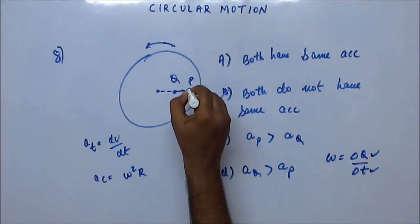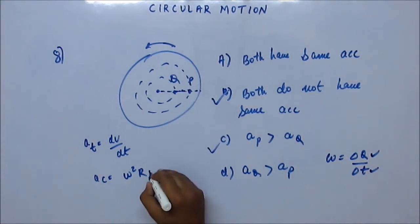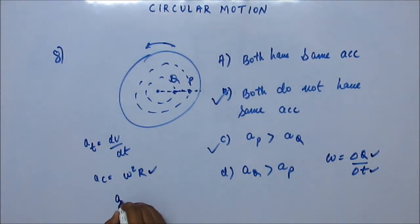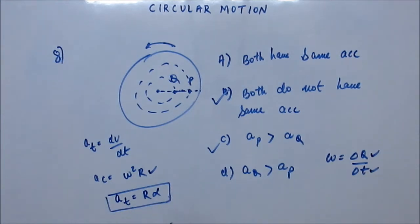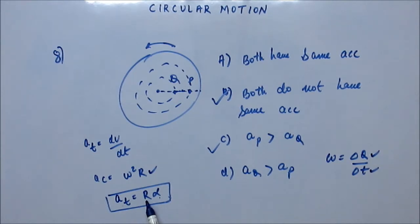P is travelling on a circular path with a higher radius than Q. So the centripetal acceleration of point P will be higher and Q will be lower. Tangential acceleration equals R times alpha. Since angular acceleration alpha is also the same for both P and Q, the tangential acceleration of P is higher because its radius is higher. Both the tangential and centripetal acceleration of P are higher than Q, making the total acceleration of P greater than Q.